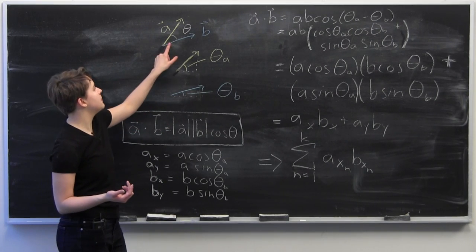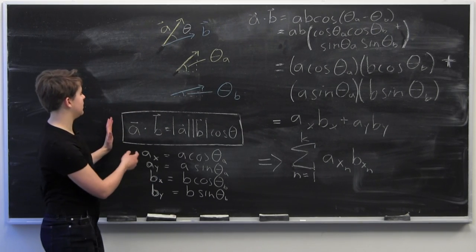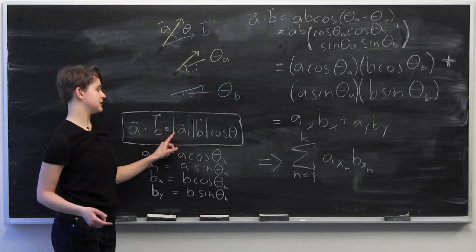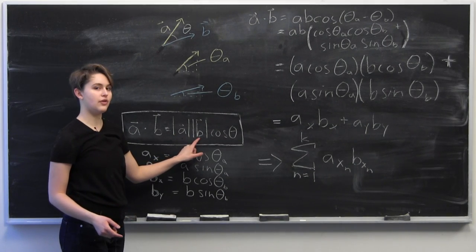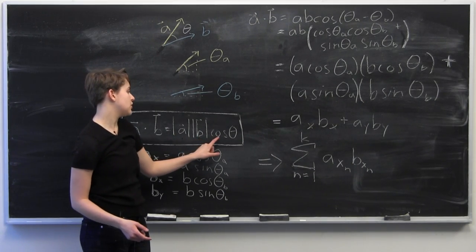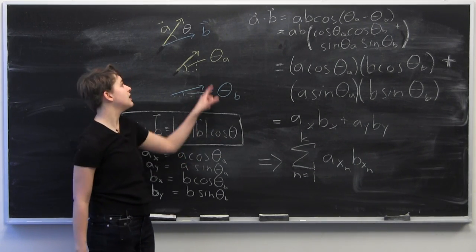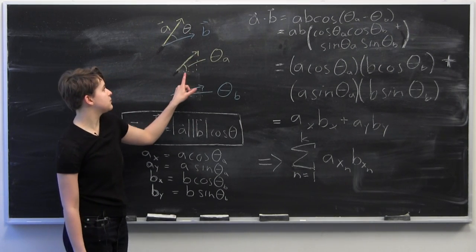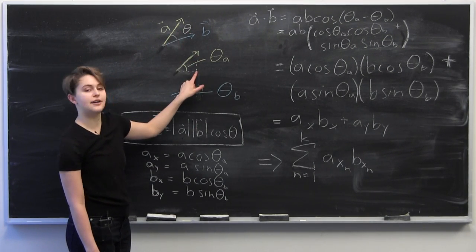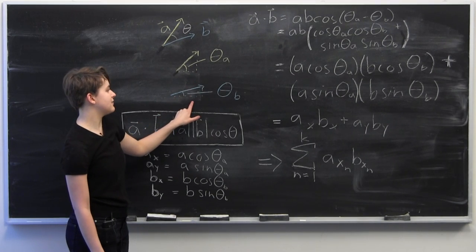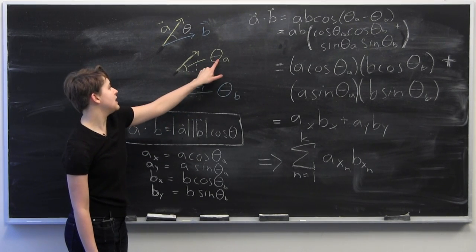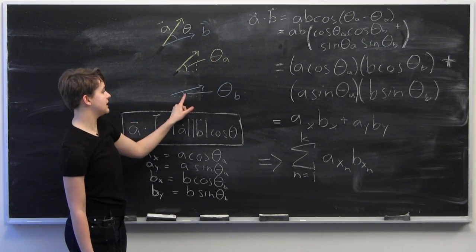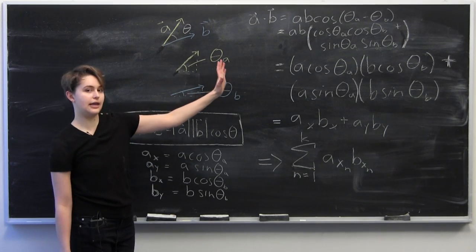The dot product here, we're interpreting geometrically as this formula, which is a·b equals the magnitude of a times the magnitude of b times cosine of theta, where theta is the angle between the two vectors. For the purpose of this proof, I'm considering a as a vector by itself and b as a vector by itself, and theta sub a is this angle here and theta sub b is this angle here.